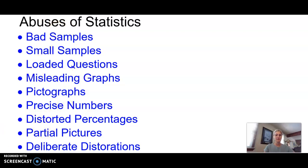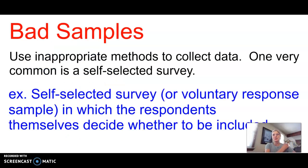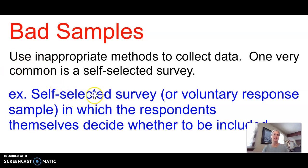Here are the vocabulary bullets for today. At the end and in the homework, the textbook will give you a situation and you'll identify what is correct or incorrect and which vocabulary label applies. So: a bad sample means using inappropriate methods to collect data. One very common example is a self-selected survey, because people can choose to participate or not, and it might not be free — you may need a stamp or internet access. So a self-selected survey is not a good representative of the population.